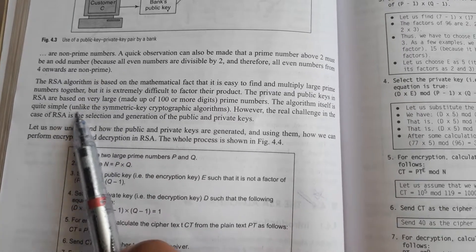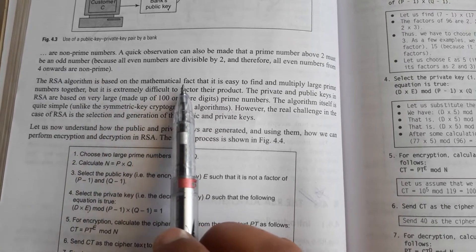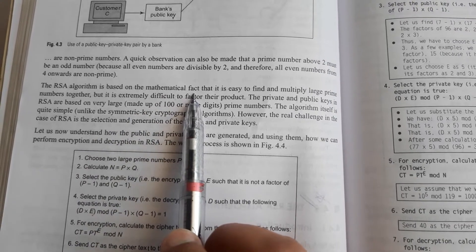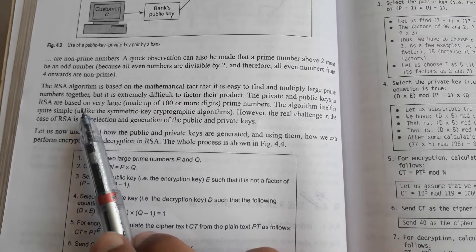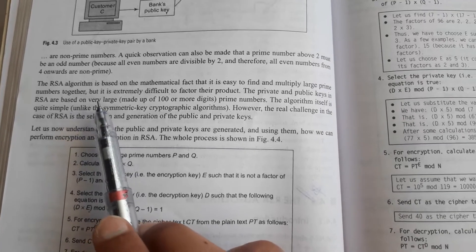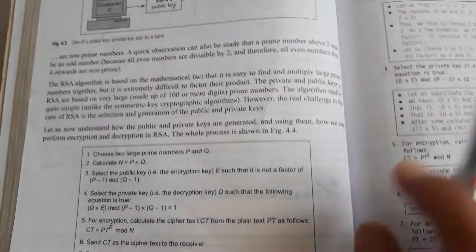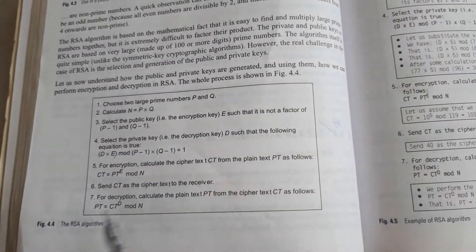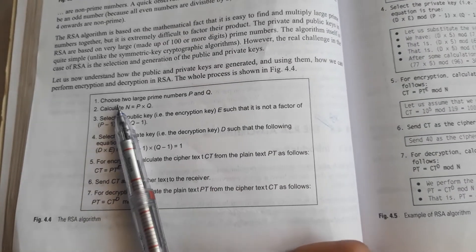So RSA algorithm is based upon some mathematical fact that it is easy to multiply large prime numbers. There is an algorithm that is used to encrypt data using RSA algorithm. In the first step we have two large prime numbers, that is p and q.